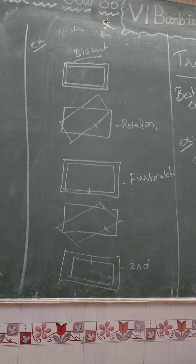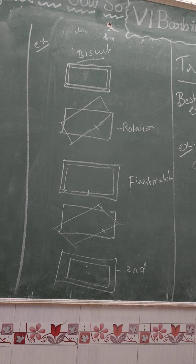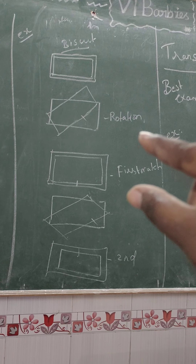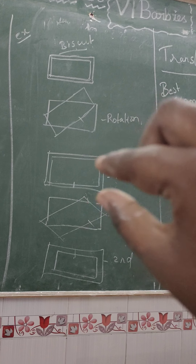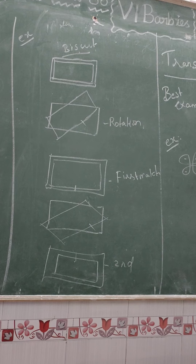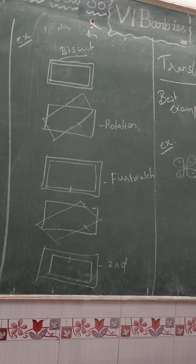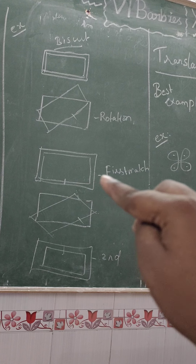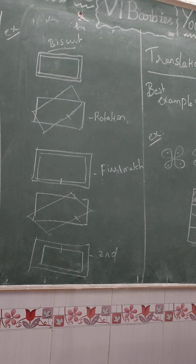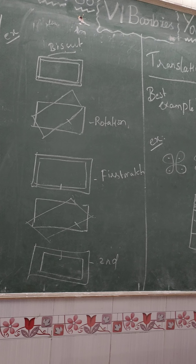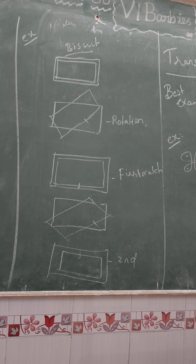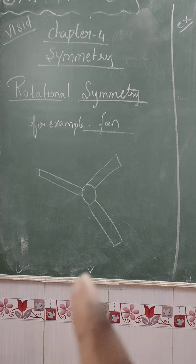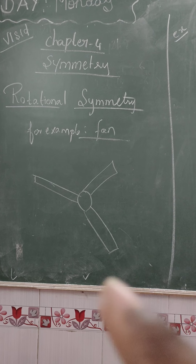In the rotational symmetry, we can see two biscuits. Let's frame the same side. If we rotate the same shape, we can see the same shape in the same space. This is the first one. If you rotate it like this, you can place it correctly. Then how many times will it match? Two times. Now if you take the fan, how many times will it match? Three times. If you rotate it like this, three times.